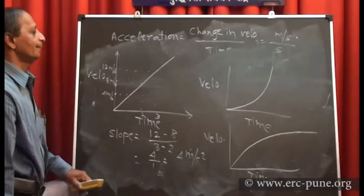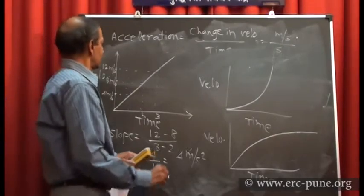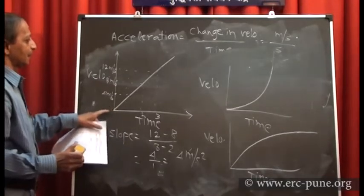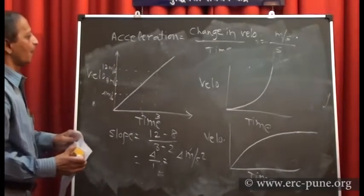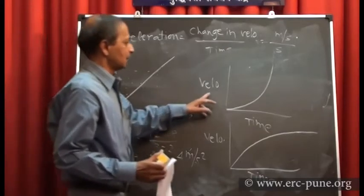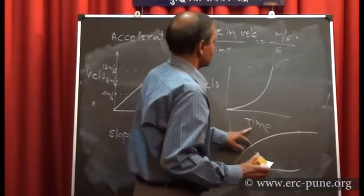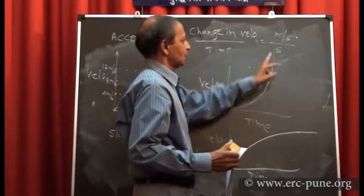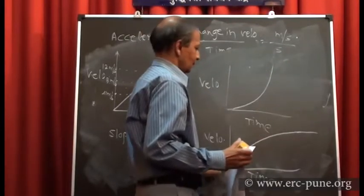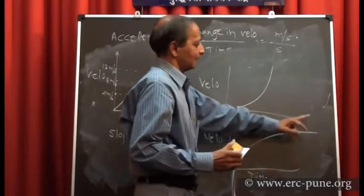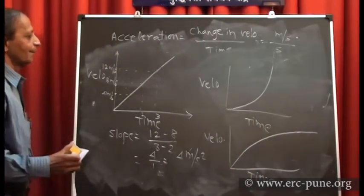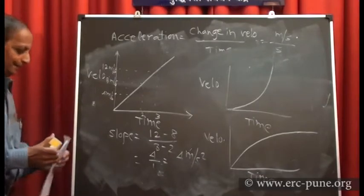To summarize the different velocity-time graphs: if it is a straight line parallel to the time axis, the body moves with uniform velocity. If it is a straight line with positive slope, velocity is increasing uniformly. If it is a curve bending upward, velocity is increasing non-uniformly. If it curves and flattens, the velocity is decreasing in rate and reaching a maximum value.